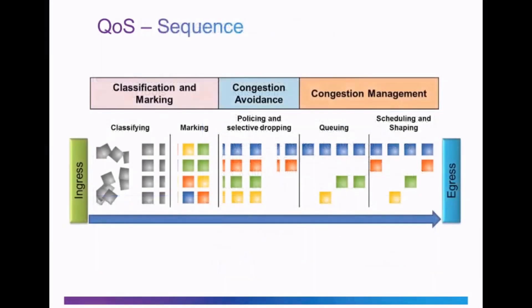Looking at this diagram, you can see the three sets of tools being used in sequence. From the ingress interface on a router to the egress or exit interface, traffic is first classified and then marked. Notice in the graphic how packets before being classified are all shown as gray. As they are classified into different classes, they are marked in the IP header, indicated by the colorization of the different packets.